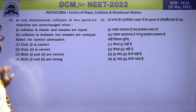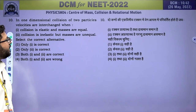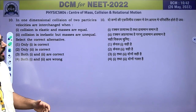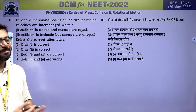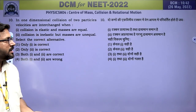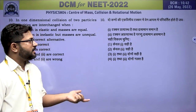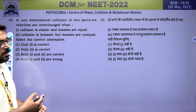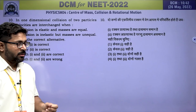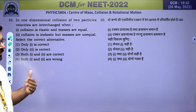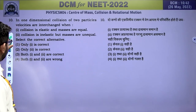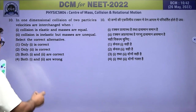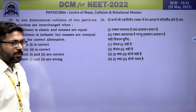In one-dimensional elastic collision of two particles, velocities are interchanged when the collision is elastic and masses are equal. This is a well-known result — in equal-mass elastic collisions, velocities interchange. For unequal masses, we cannot say the same with certainty. So only the first statement is correct.